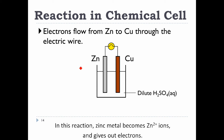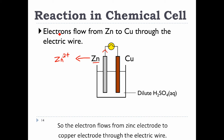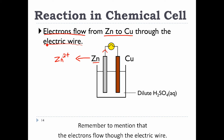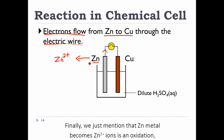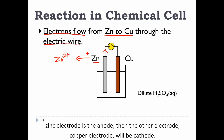In this reaction, zinc metal becomes Zn2+ ions and gives out electrons, so the electron flow is from the zinc electrode to the copper electrode through the electric wire. Remember to mention that electrons flow through the electric wire. Since zinc metal undergoes oxidation, from 'an ox,' the zinc electrode is the anode, and therefore the copper electrode is the cathode.